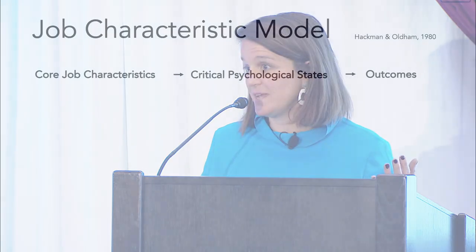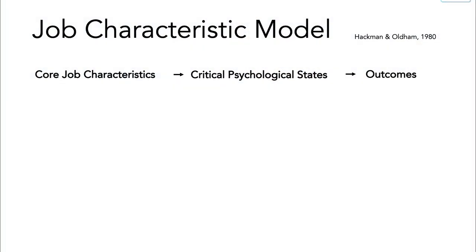Hackman and Oldham in the 1980s were interested in why organizations were losing employees and developed a model still valid today. High-level: characteristics of jobs lead to critical psychological states that lead to outcomes of both satisfaction and work efficacy. The job characteristics are: skill variety, task identity, significance, autonomy, and feedback. These lead to meaningful work, responsibility for work outcomes, and knowledge of results — which lead to growth, job satisfaction, and efficacy. You can have both satisfied and effective workers.